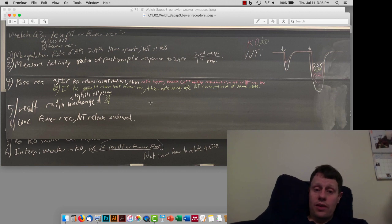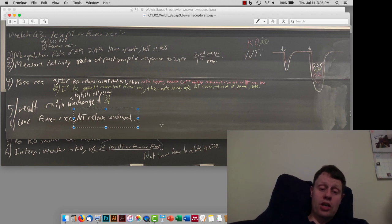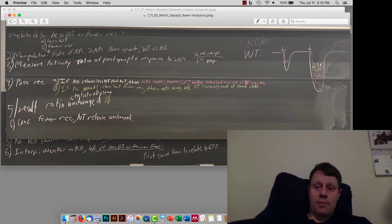That is, in fact, not what they see. What they see is the ratio is unchanged. And so, what they conclude is that the amount of neurotransmitter released is unchanged. And then, they decide that the most likely explanation for the decrease in response is because of fewer receptors.